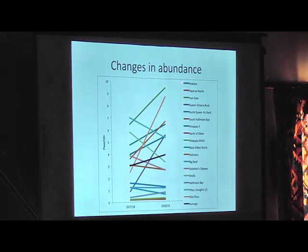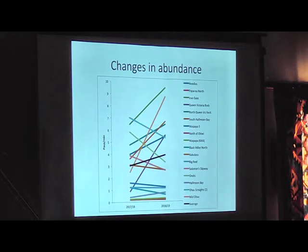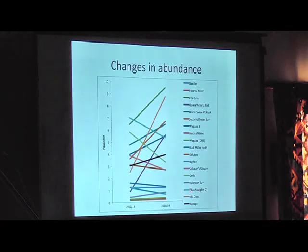If the lines are going up, that means we're detecting an increase in abundance in those time periods; if they're going down, it's the opposite. The steeper the line is going up, the higher the increase in abundance you're seeing. The bold line I want to draw your attention to is the average across the whole area that we've surveyed.